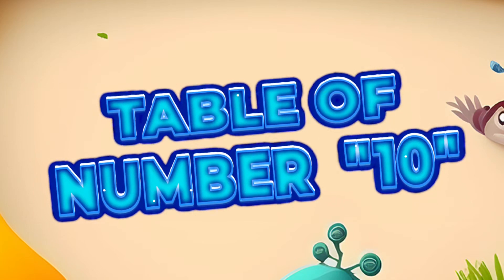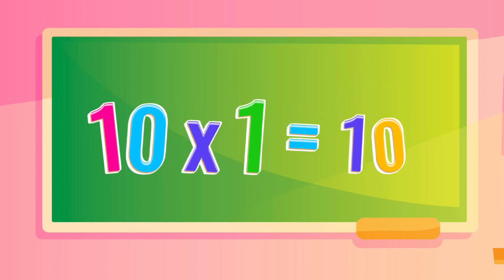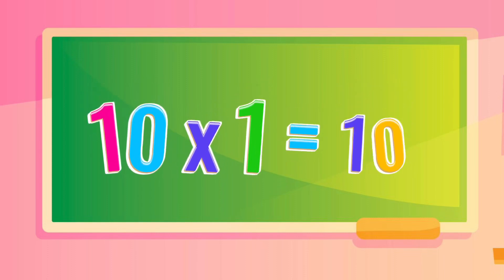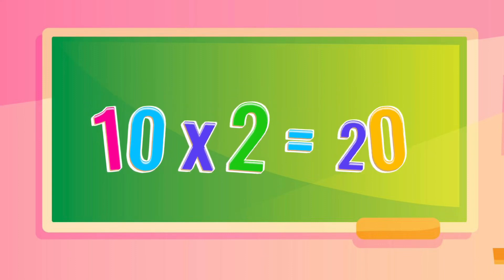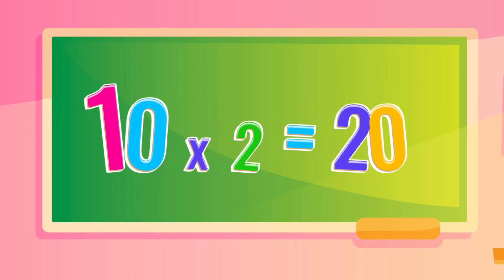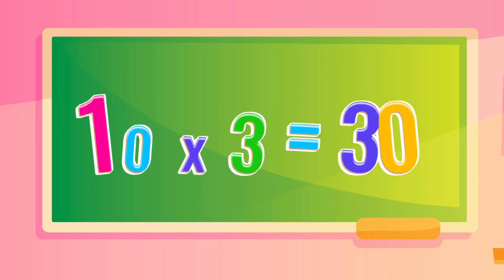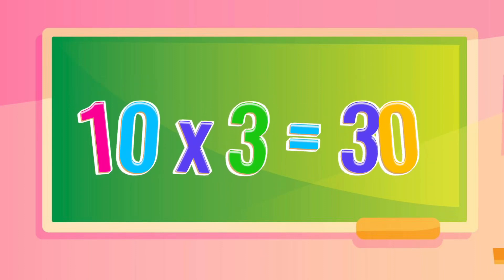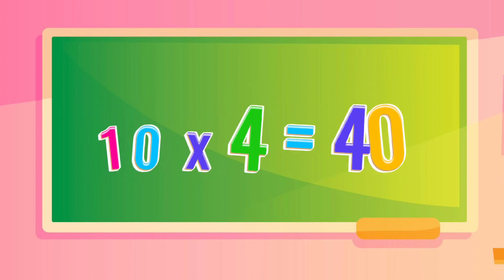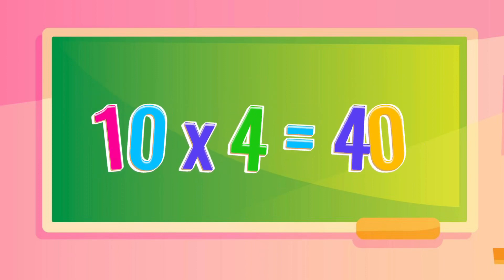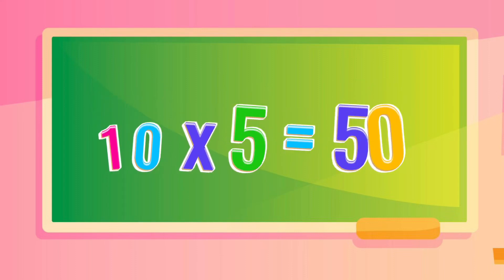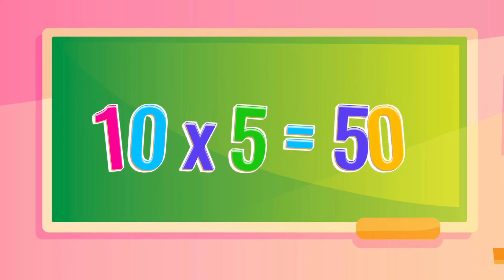So let's begin. 10 times 1 is 10, 10 times 2 is 20, 10 times 3 is 30, 10 times 4 is 40, 10 times 5 is 50.